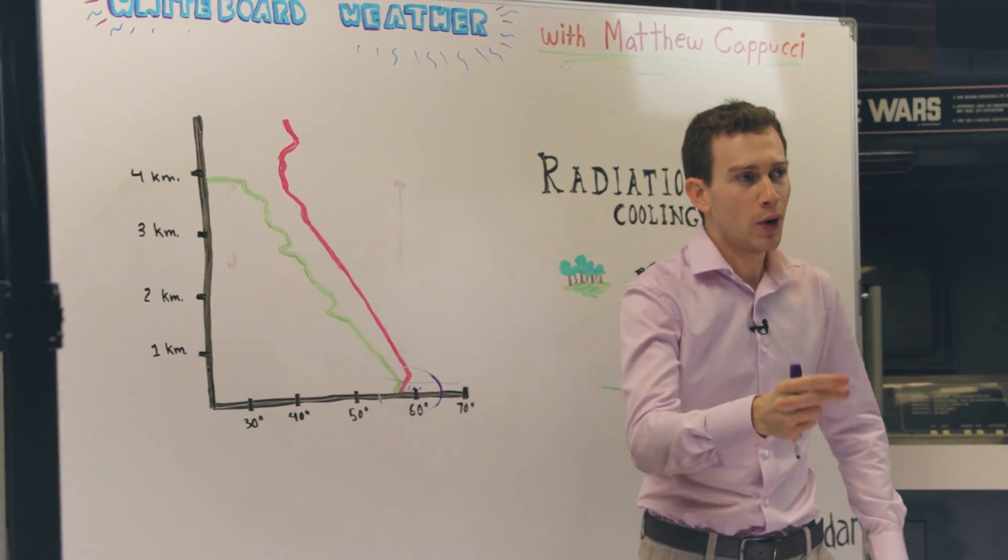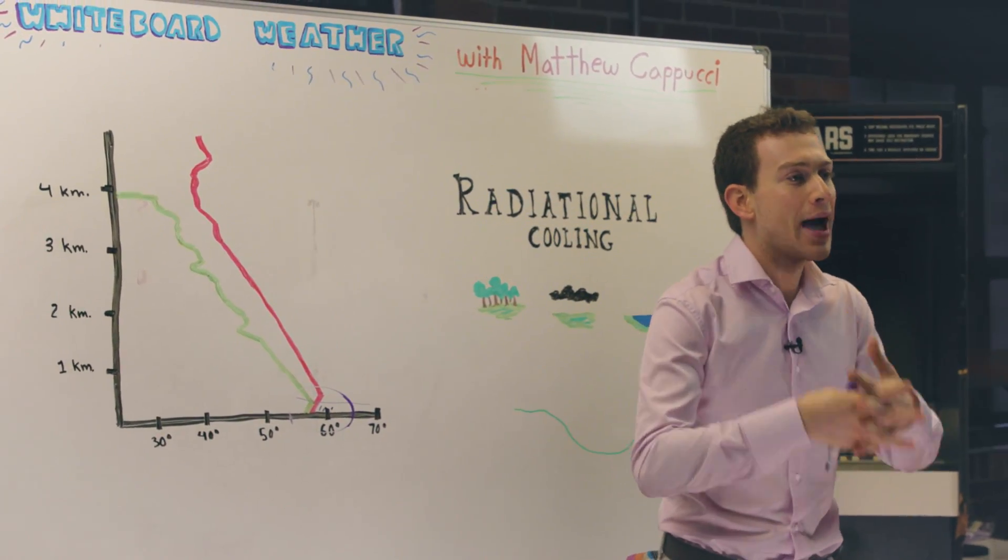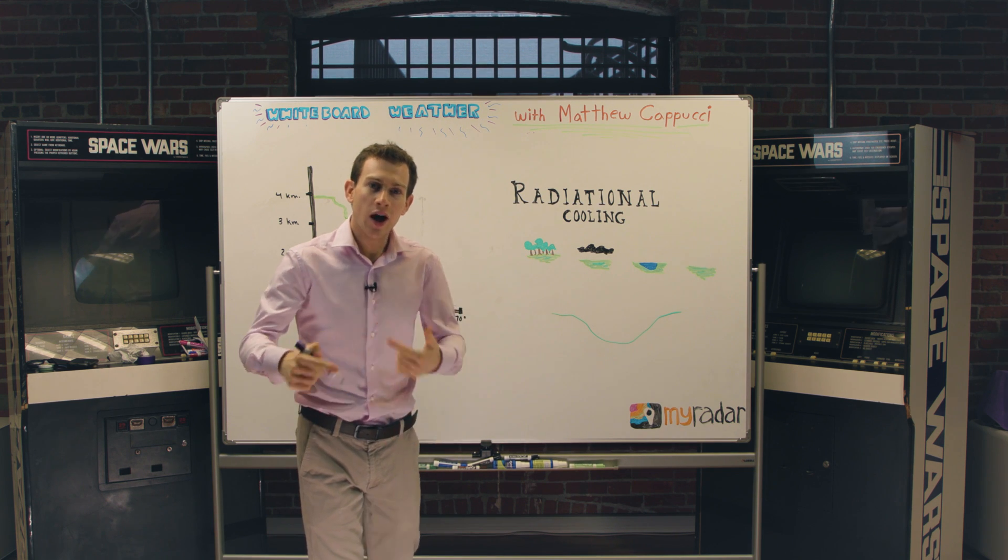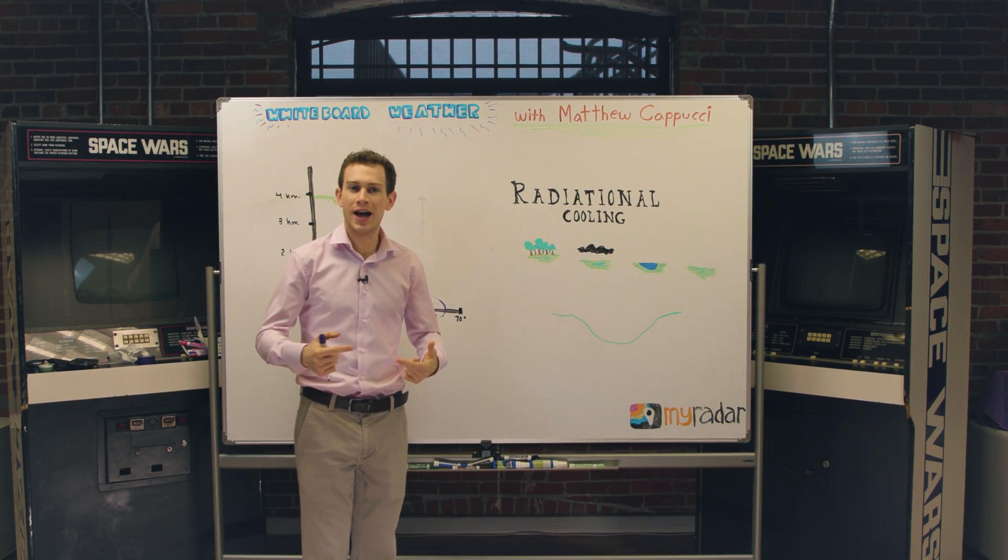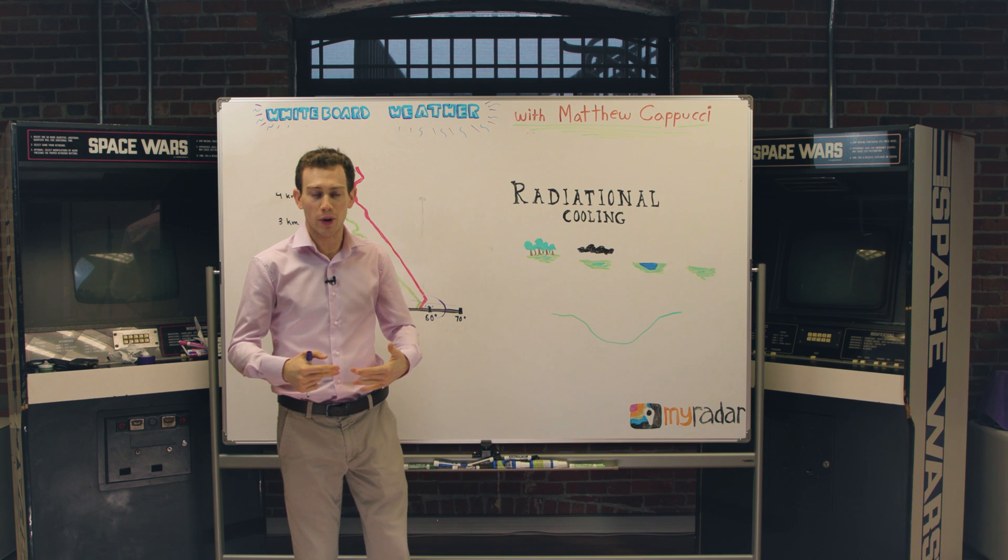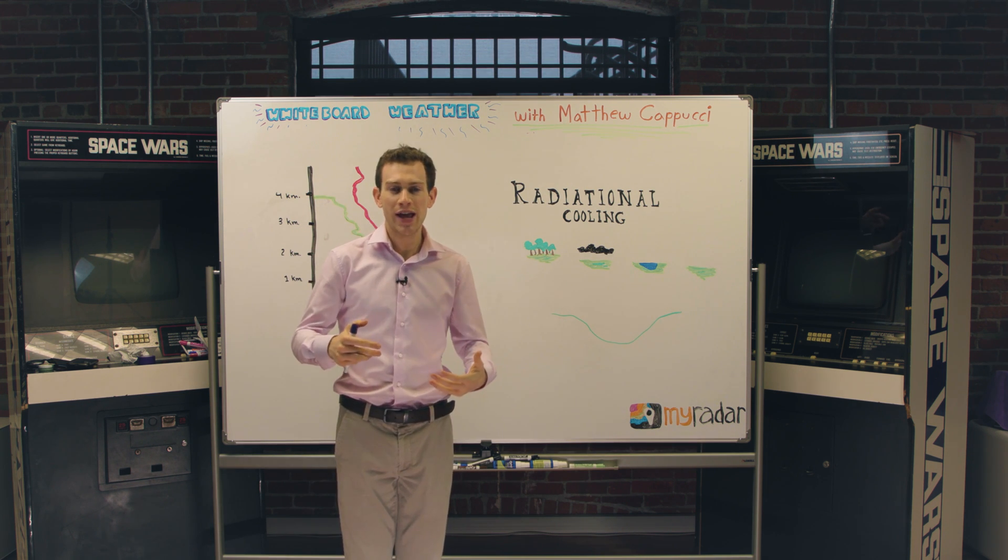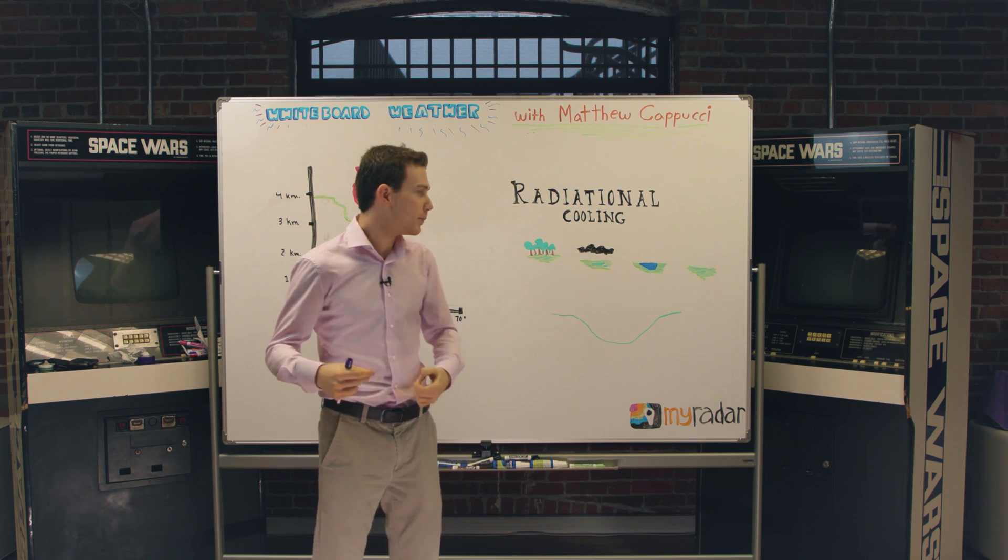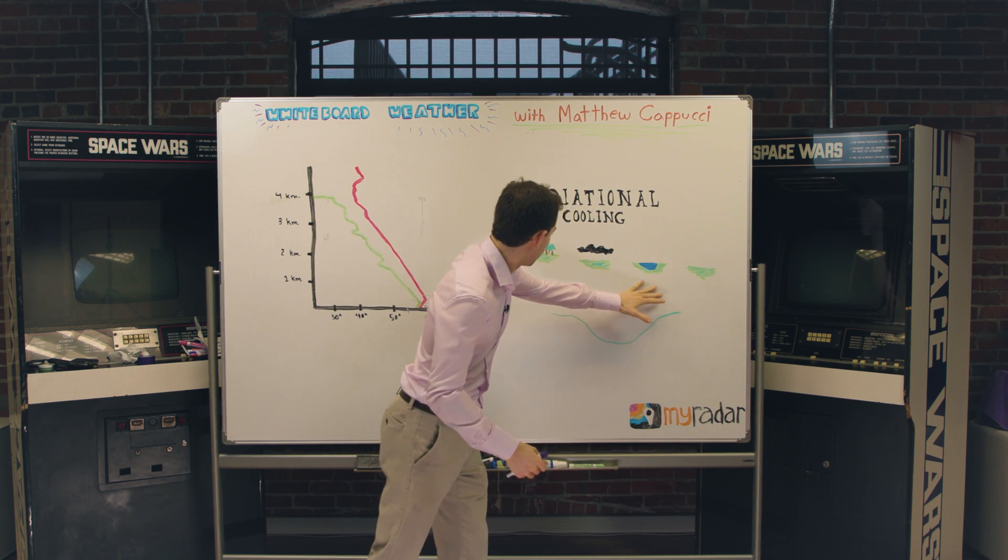Dew point and temperature matched up produces fog. Now fall is prime for fog because oftentimes you get that radiational cooling at night that lets the temperature drop down to the dew point. You see, dew point doesn't really change, but temperature fluctuates quite a bit. So we have a couple different setups here. Let's talk about trees.